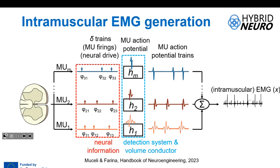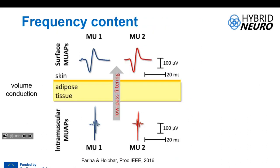There are two reasons why the signal is more sparse. First, the intramuscular electrode is much more selective. Second, the action potentials per se are narrower in time — they are high frequency. The tissue between the muscle and the surface electrode acts as a low-pass filter, which is also why the bandwidth of the surface signal and the intramuscular signal is different.